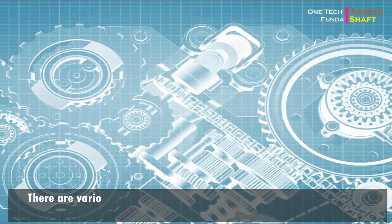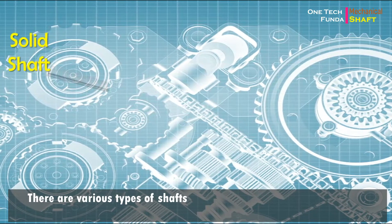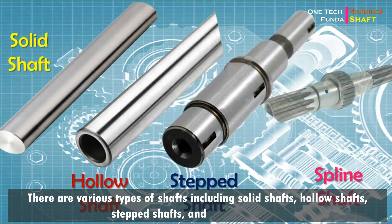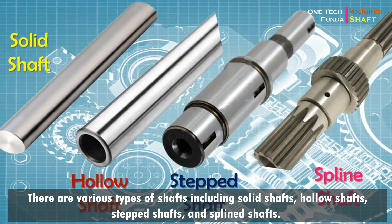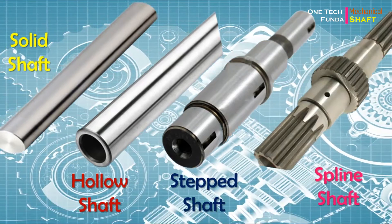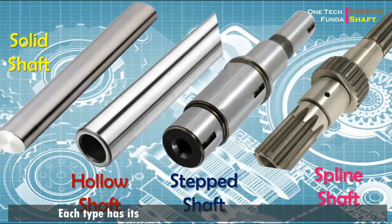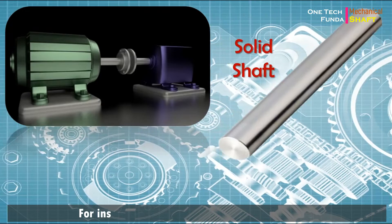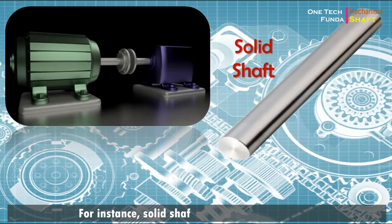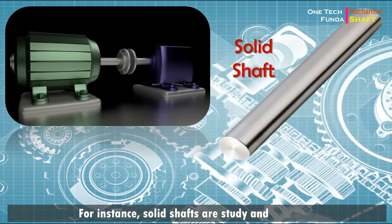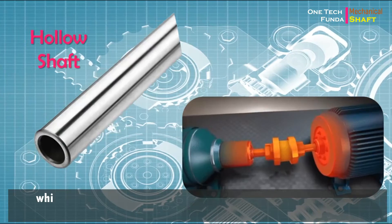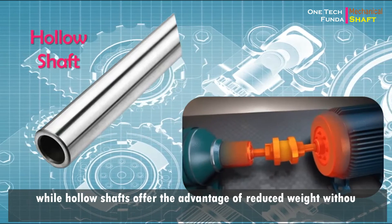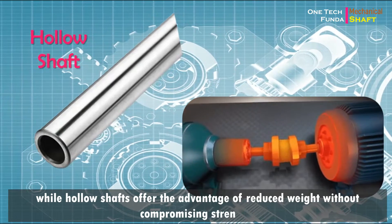There are various types of shafts including solid shafts, hollow shafts, stepped shafts, and splined shafts. Each type has its unique characteristics and applications. For instance, solid shafts are sturdy and reliable, while hollow shafts offer the advantage of reduced weight without compromising strength.